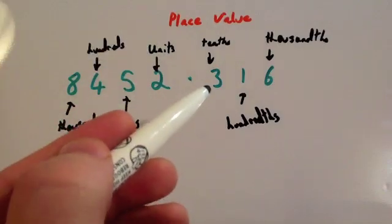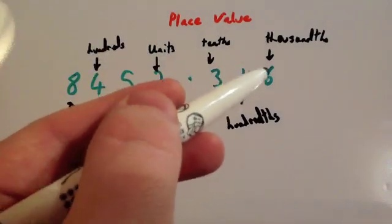To the right of the decimal point you've got tenths, hundredths, and thousandths.